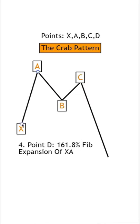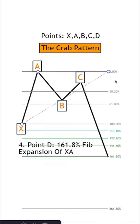with the first one being a Fibonacci expansion of move X to A, in the opposite direction, that reaches the 161.8 level.